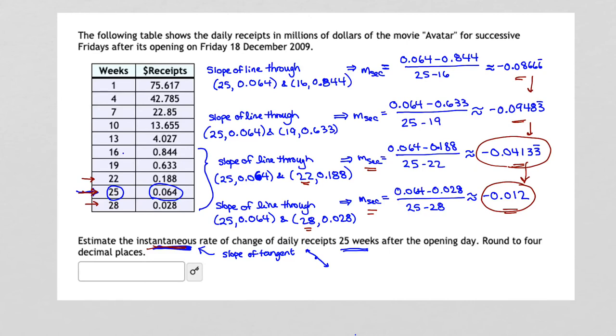And because there's not a specific pattern there, and I see that 25 lies in between 22 and 28, actually evenly in between those two, I want to calculate an average of these average rates of change. I'm going to average these two average rates of change together. And that average is what I'm going to use as my instantaneous rate of change.